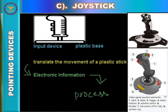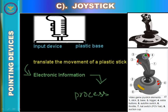A joystick is an input device consisting of a stick that pivots on a base and reports its angle or direction to the device it is controlling. As you can see, the stick is what you control with your hands, and the base is what the stick is attached to. You can move or rotate that stick in every angle. The red button is called the trigger — when you press it, you activate the joystick.